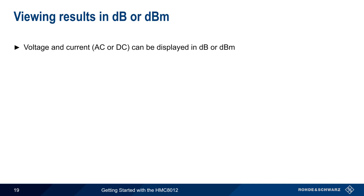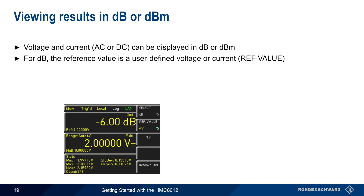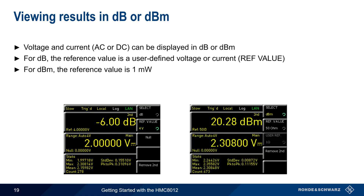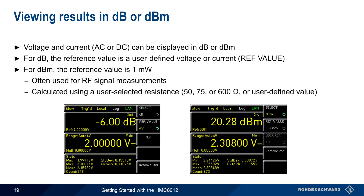One second measurement option for voltage and current is showing values in dB or dBm. If dB is selected, the displayed values are relative to a user-defined voltage or current – for example, with a reference value of 4 volts and a measured value of 2 volts, the difference is minus 6 dB. dBm measurements are always made relative to 1 milliwatt, which is a common measure when working with RF signals. The dBm value is calculated based on a user-selected resistance, with preset values for 50, 75, and 600 ohms, or any arbitrary value can be manually entered.